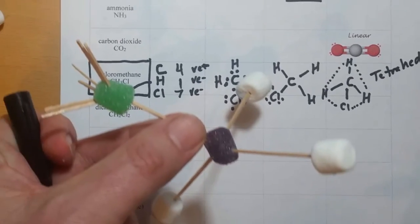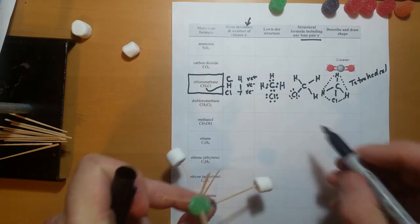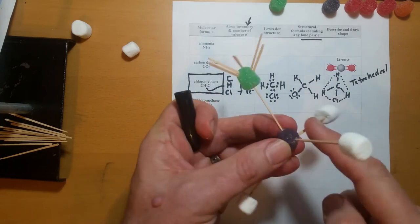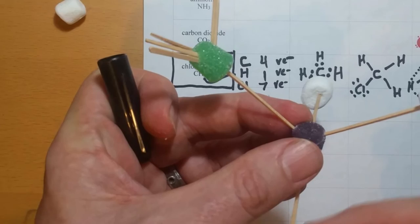In our finished molecule, we can see our three lone pairs on chlorine, one bond on each hydrogen, and four bonds on our central carbon atom.